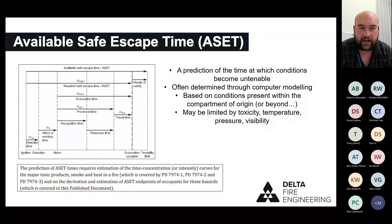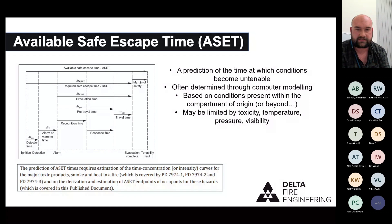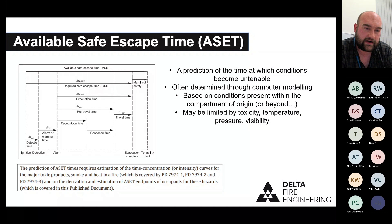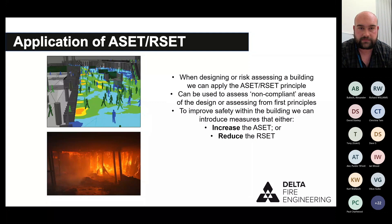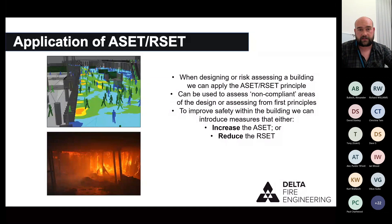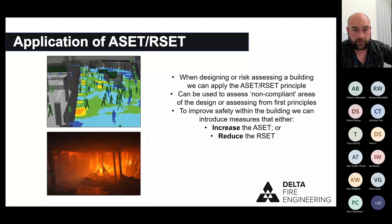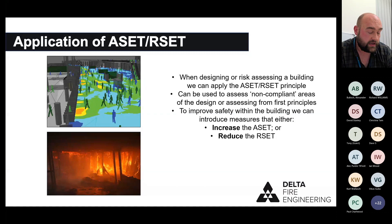In a building or compartment, we reach a time when people are unable to continue their escape based on tenability criteria — toxicity levels too high, temperature too high, visibility too low. That is the ASET time. We compare the two: if conditions are still tenable when people have evacuated, and we have a margin of safety, we've met the means of escape criteria. If not, we need to redesign, either increasing the ASET or reducing the RSET.